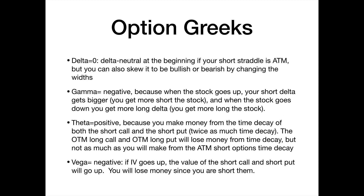Theta is positive — you make money from the time decay of that short call and short put, just like a short straddle, giving you twice as much time decay. In an iron butterfly, the long out of the money call and put also suffer from time decay and you'll lose money on them, but you make more from the time decay of the short call and short put because they're closer to being at the money. As a result, the whole position is theta positive and makes money over time.